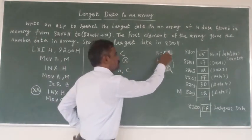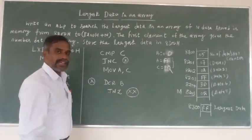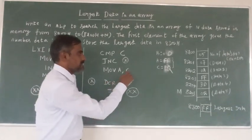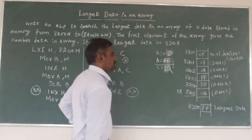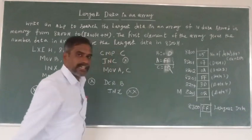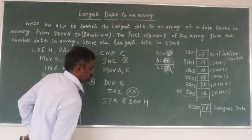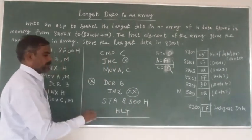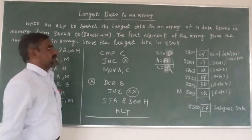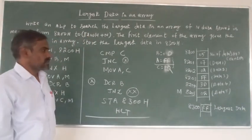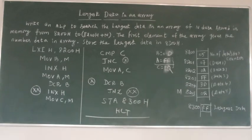Compare accumulator with 02. Here the carry flag will be reset - accumulator data is the largest. Condition satisfied means jump to decrement: B equals 00. B register zero means the largest data is now in A register. Store A register data to 8300H: STA 8300H. End of program. This is the program for finding the largest data in an array.